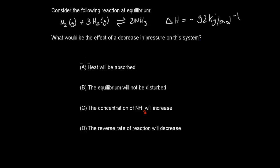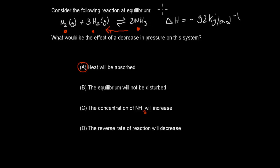Welcome back. The correct answer is A. If we decrease the pressure, there is more space, so the equilibrium shifts toward the side with more moles of gas — the reverse (left) direction, since there are 4 moles of gas on the left but only 2 on the right. When the reaction shifts in reverse, it is endothermic, meaning heat will be absorbed. So A is correct and all other options are wrong.